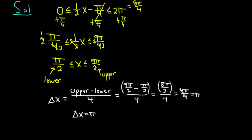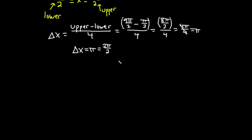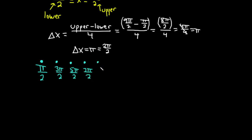We're going to start at π/2 and keep adding delta x (which is π, or 2π/2) until we reach 9π/2. So our five x-values are: π/2, 3π/2, 5π/2, 7π/2, and 9π/2. That's where we stop, because 9π/2 is the upper limit of our interval.